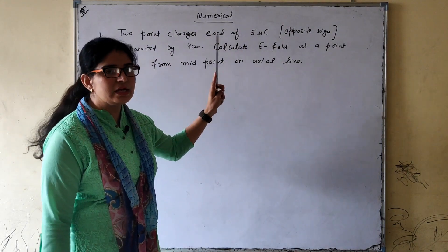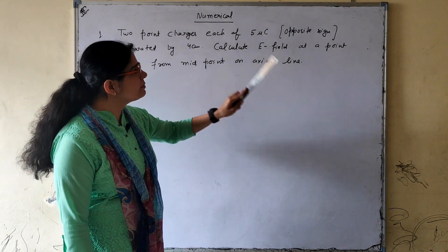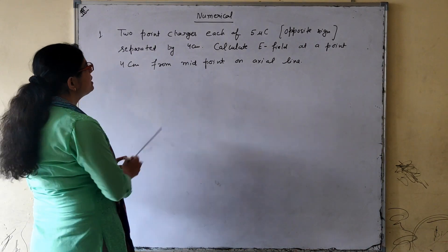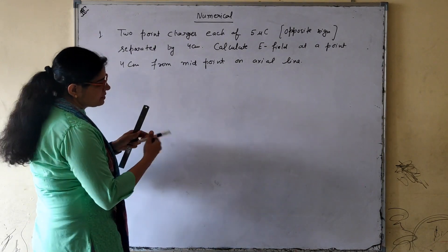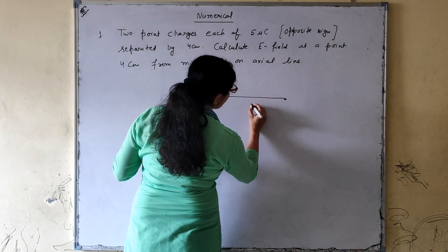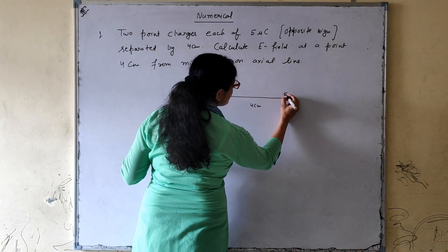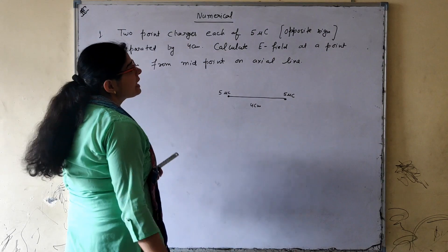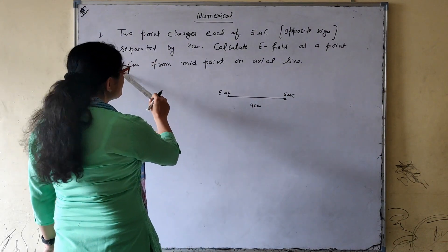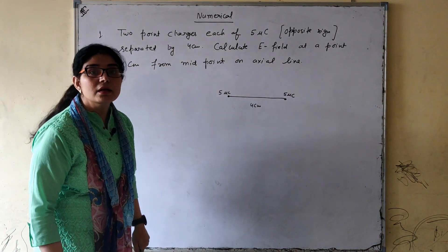It is quite clear that dipole is not explicitly written, but two point charges each of 5 microcoulombs, opposite sign — that means a dipole. These two charges are separated by 4 centimetres. Both have a value of 5 microcoulombs. Calculate the electric field intensity at a point 4 centimetres from the midpoint on the axial line.